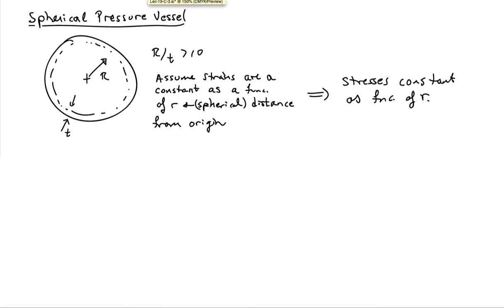The other common pressure vessel case is the spherical pressure vessel. So you have a sphere, radius R, and it has wall thickness T. And again, we make this thinness assumption.